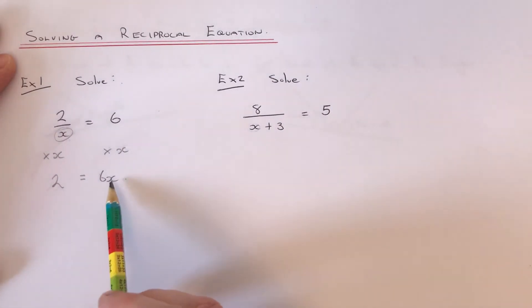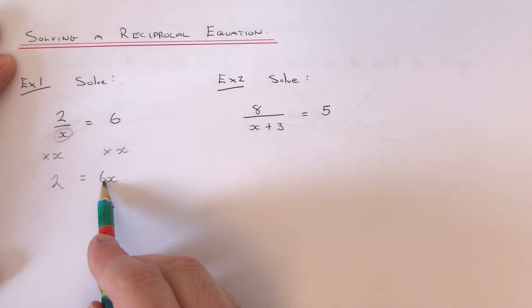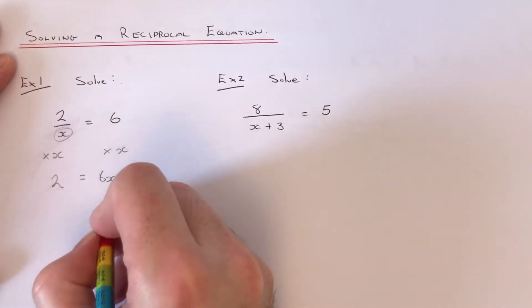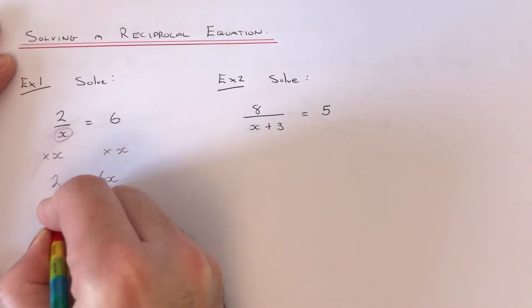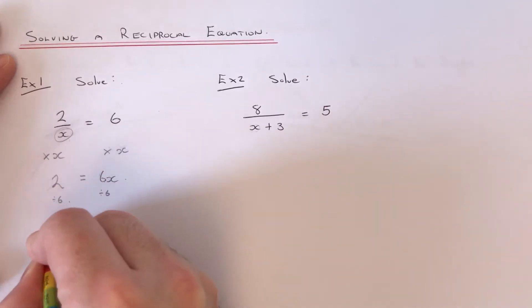And then all we've got to do now is get rid of the 6 away from the x. So the inverse to times 6 is to divide by 6. So we get 2 over 6 equals x.